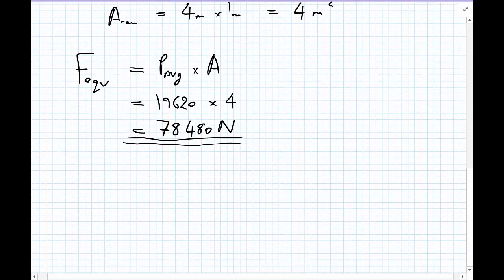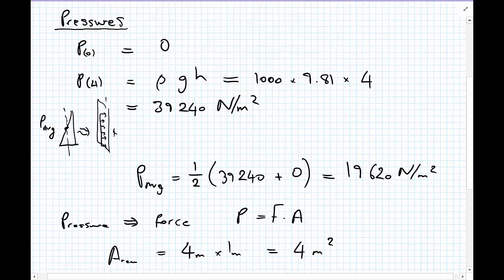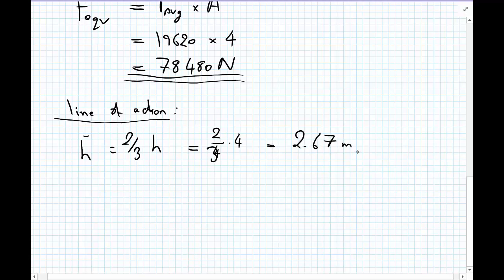So we use that to tell us where the line of action of this force is. So the line of action is then, and I'm going to label this here, the line of action as H bar. So the line of action H bar equals 2 thirds of the total depth, H, which equals 2 thirds multiplied by the total point, H4, which equals 2.67 meters.